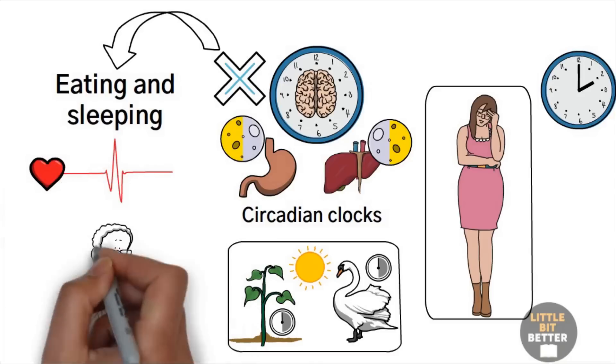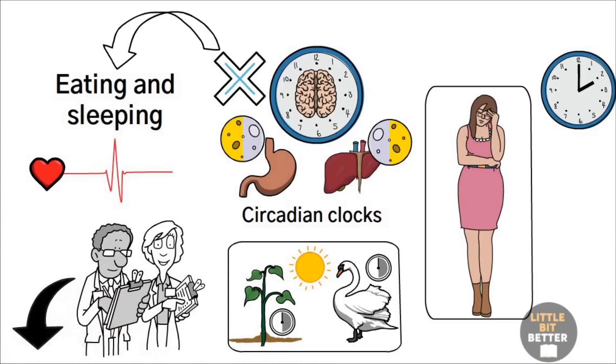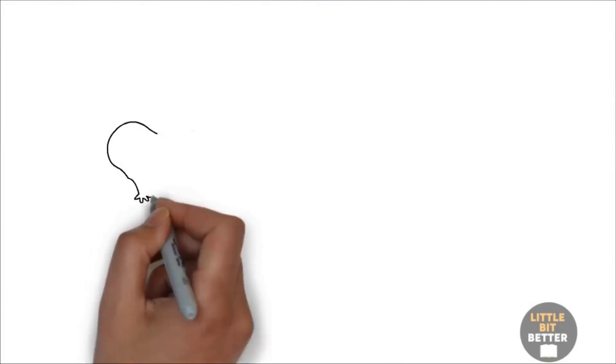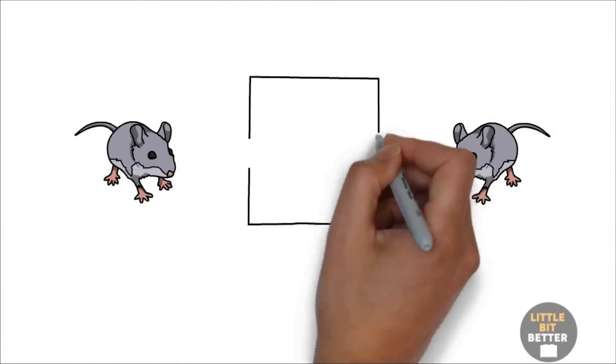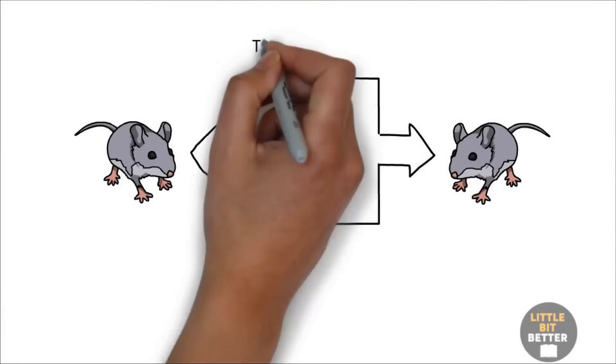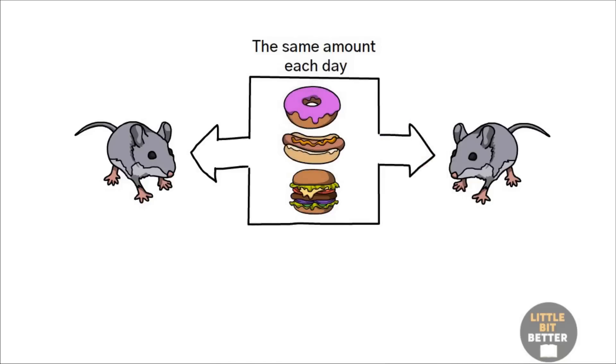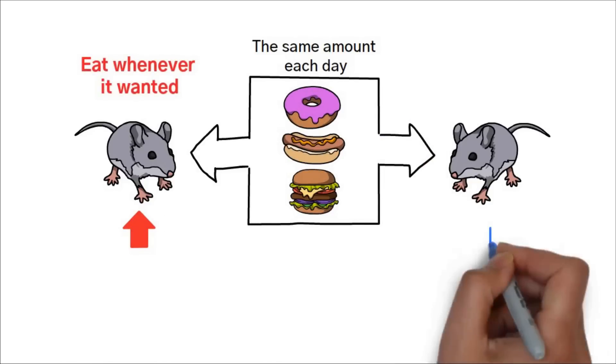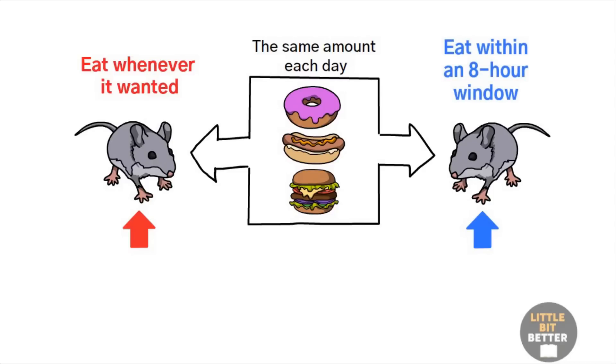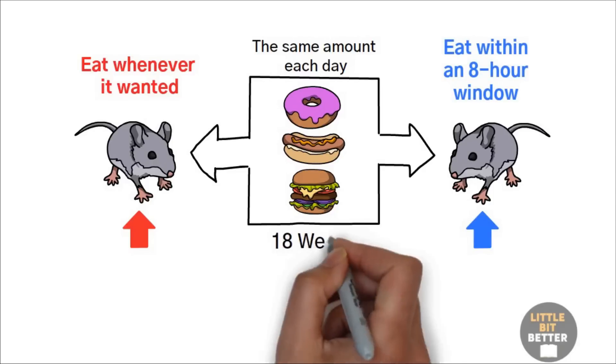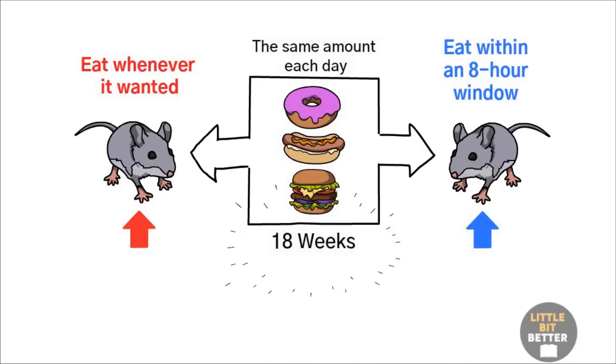Here's an experiment about the inconsistency that personally blew my mind. The author took two identical twin mice and gave them the same unhealthy diet in the same amount each day. The only difference was that one mouse was allowed to eat whenever it wanted, while the other had to eat within an 8-hour window. The experiment lasted for 18 weeks, and the results were quite shocking.